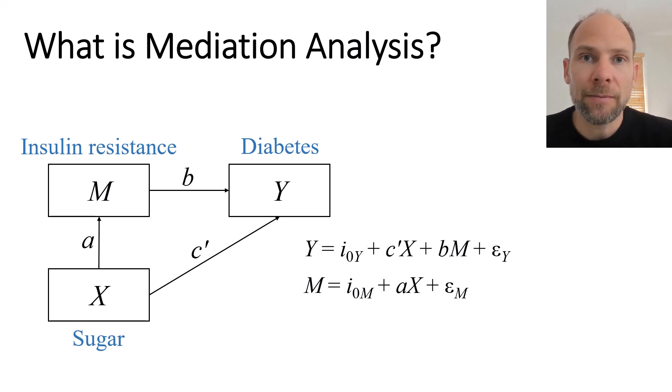This system of equations that defines this model can be estimated using path analysis in a single step. You could use a path analytic model available in programs for structural equation modeling such as Mplus or the lavaan package in R that allows you to simultaneously estimate the coefficients of both these regression equations in a single step, or you can do it sequentially.